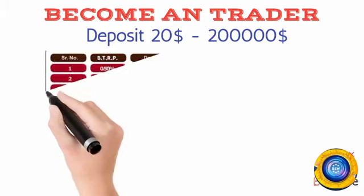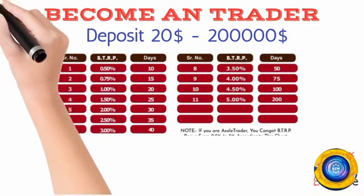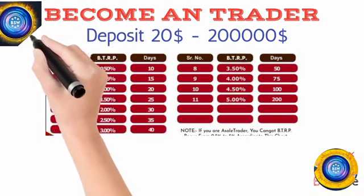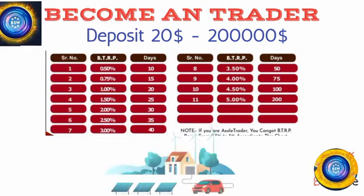One to eleven level serial number profit, 0.50% to 5% profit. Become an advisor - deposit $20 to $2 lakh, one level to 11 level profit now.